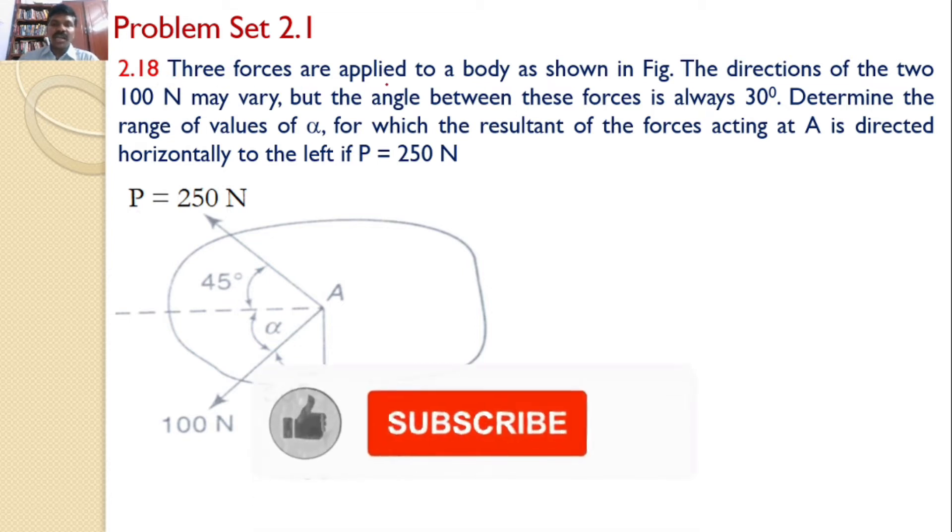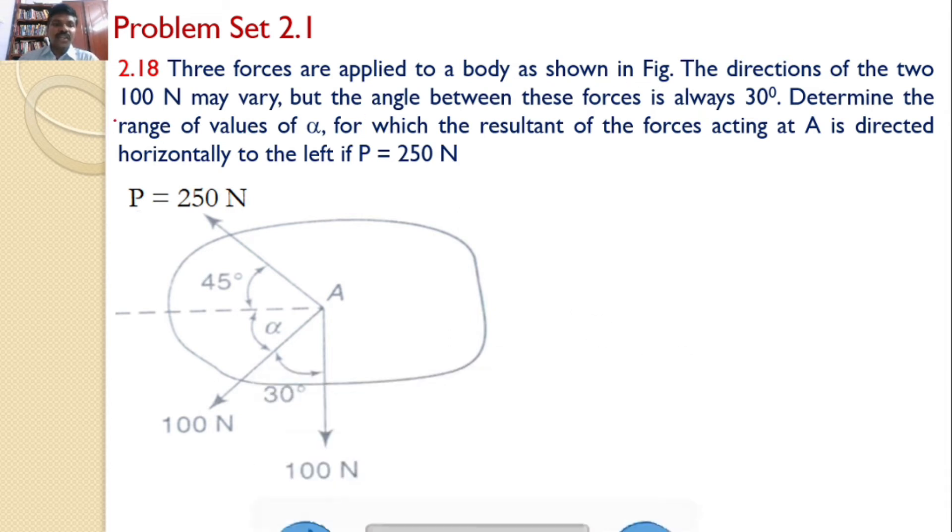Three forces are applied to a body as shown in the figure. The directions of the 100 newtons may vary, but the angle between these forces is always 30 degrees. Determine the range of values of alpha for which the resultant of the forces acting at A is directed horizontally to the left if P equals 250 newtons. That means there is a body and three forces are acting on the body at A.